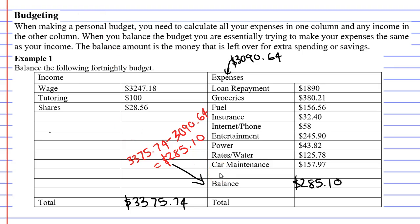Basically, the balance is the leftover money. This total should now come out the same as your expenses, because the balance is the perfect amount of money so that everything adds up to the same as your income. That balance is money you can either spend or save, and that's the end of our budgeting video.